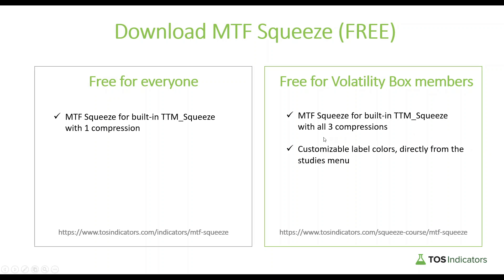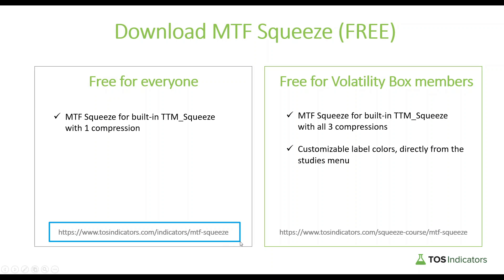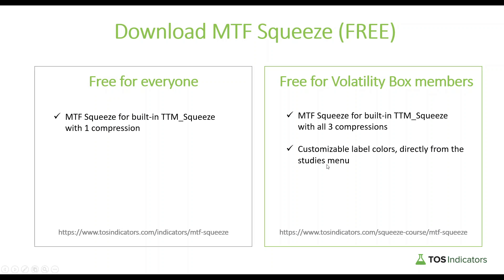For those of you that would like to directly download the indicator file, it is available for free download at tosindicators.com/indicator/mtfsqueeze. This is the one-compression squeeze we're going to be building in this tutorial. For all of our Volatility Box members, there's a new Module 9 that's been added, which has this tutorial along with another piece that takes the code one step further — all three compressions from the squeeze course, along with the ability to customize label colors directly from the studies menu.